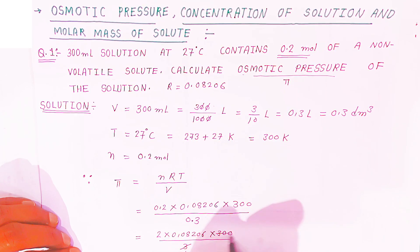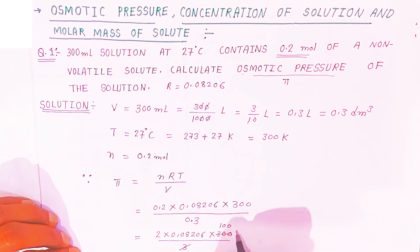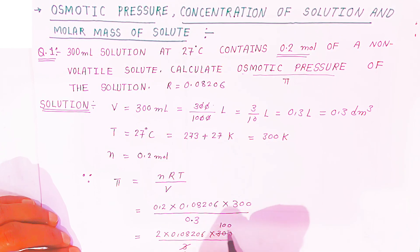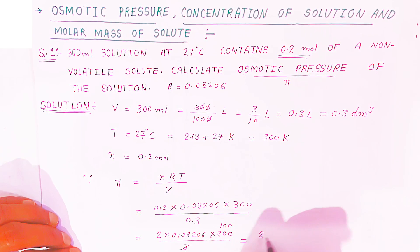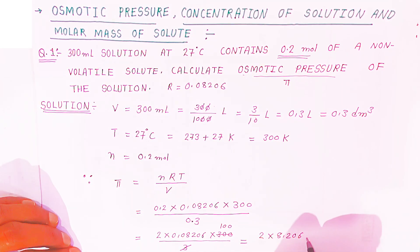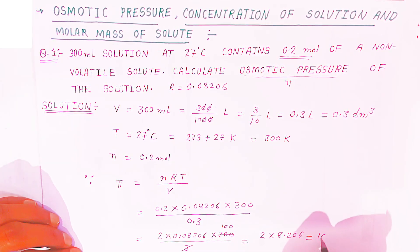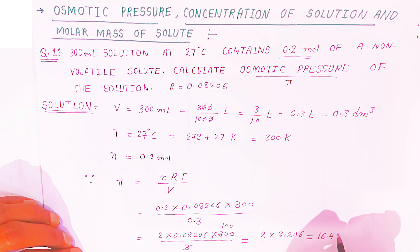Now this is 3 and this is 3. 3 ones are 3. This is 100. Now when you multiply, when you multiply twice of this and multiply by 100, when you multiply, this decimal will shift here. So 2 × 8.206, when you multiply, it will come to 16.41.